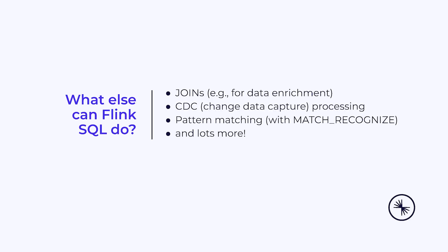In this course, we've only just scratched the surface of what Flink's SQL is capable of. Here are some of the more powerful features that we didn't have time for. Joins are incredibly useful, especially for data enrichment. The support in Flink's SQL for working with change data capture streams lets you easily enrich your real-time event streams with data from relational databases. And implementing pattern-matching use cases with Match Recognize is ridiculously fun and easy.